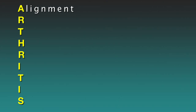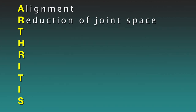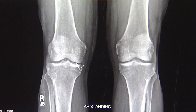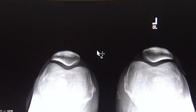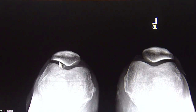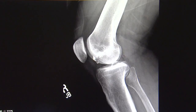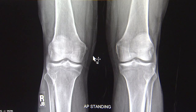The second letter is R, and that stands for reduction of joint space. I look at any joint space narrowing in the inner or medial compartment, the lateral or outer compartment, or also underneath the patella. This lets me know the extent of the arthritic process that is affecting these knees.